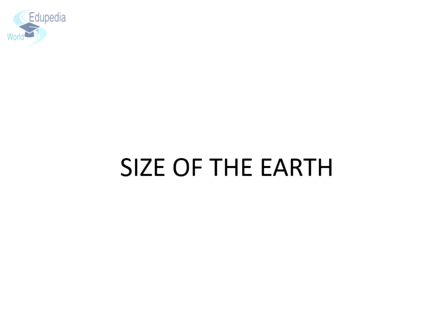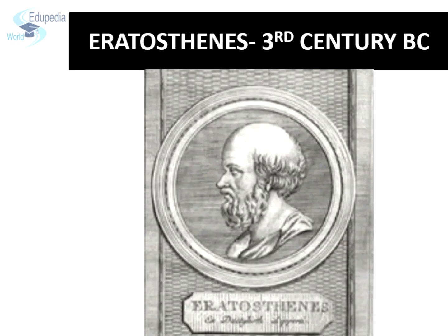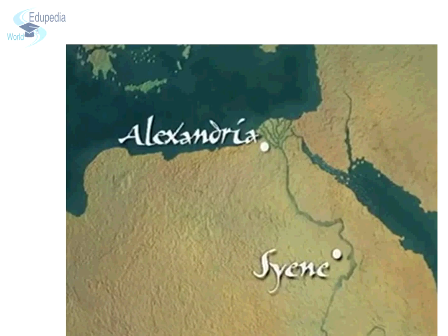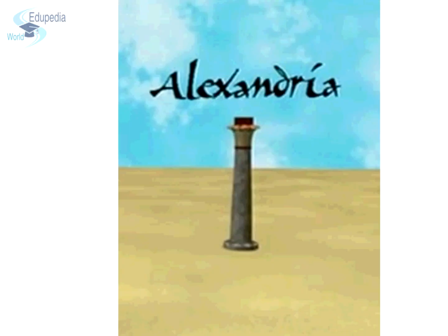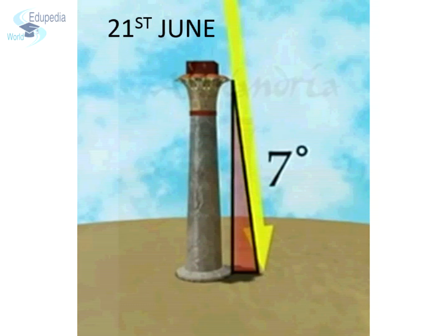Size of the Earth. Just like the shape of the Earth, the size of the Earth was also a puzzle for early people. However, Eratosthenes was able to measure the size of the Earth to near perfection in the early 3rd century BC. Eratosthenes lived in the city of Alexandria in northern Egypt, by the Nile River and the Mediterranean Sea. There was a tall tower in Alexandria. Eratosthenes measured the length of the tower's shadow on 21st June and used that information plus some geometry to figure out the angle between the Sun, finding it to be 7 degrees.